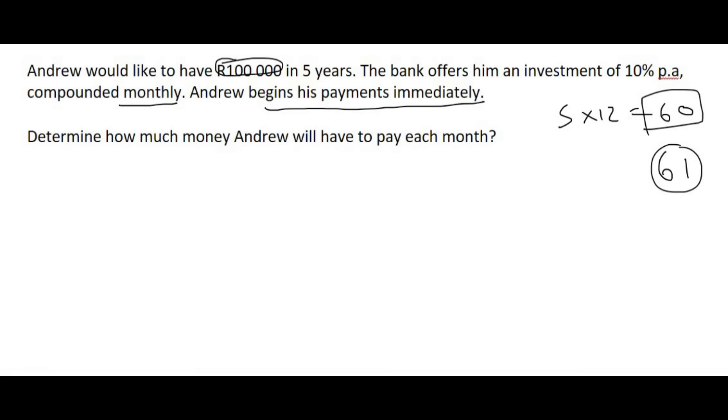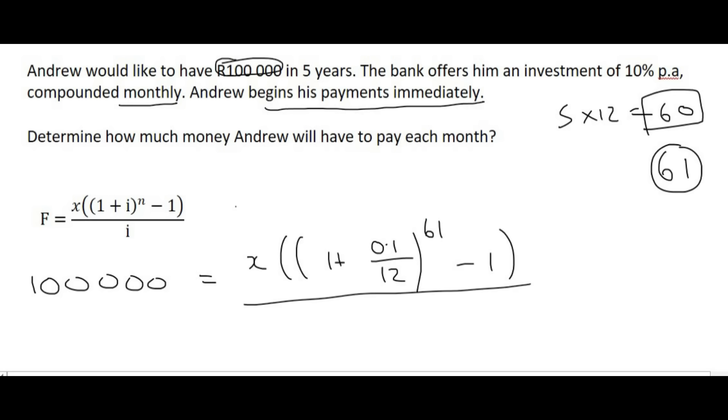So there we have everything we need. We can use the future value formula where the R100,000 is the future value. So that'll be 100,000 equals x, his monthly payment. We don't know what that is. The interest is 10%, so that's 0.1 compounded monthly. And over here we're going to have 61 payments. Then we're going to have minus 1 over 0.1 over 12.